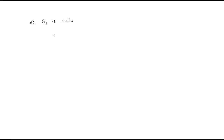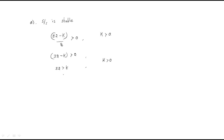Simplifying (32 − k)/8 > 0 gives 32 − k > 0, which means k < 32. Combined with k > 0, the system is stable when k is between 0 and 32. So whenever the k value in the given system satisfies 0 < k < 32, we can directly say the system is stable.